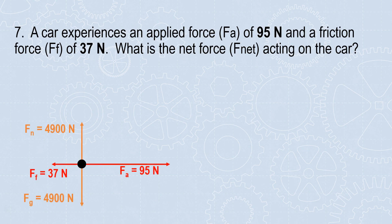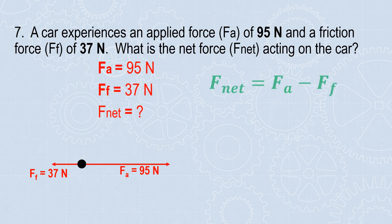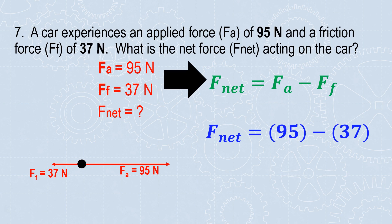A car experiences an applied force of 95 newtons and a friction force of 37 newtons. What is the net force acting on the car? Here's your formula. Substitute in and evaluate. The applied force is 95. The frictional force is 37. 95 minus 37 gives me 58. Force is measured in newtons.